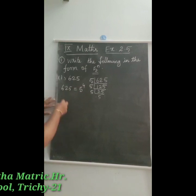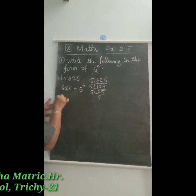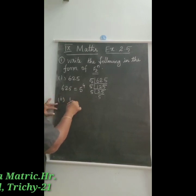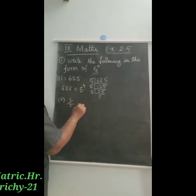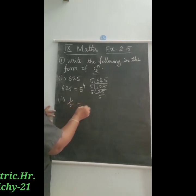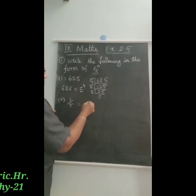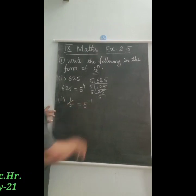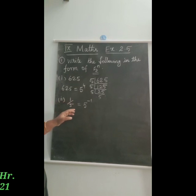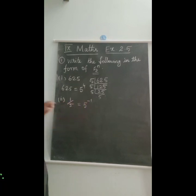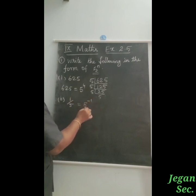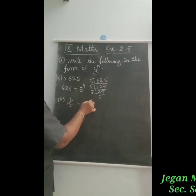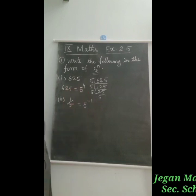The 2nd question is 1 by 5. Since 1 by 5 is a reciprocal, we can write it as 5 power minus 1. So 1 by 5 is equal to 5 power minus 1, and n is equal to minus 1. So we change 1/5 to 5 power minus 1.